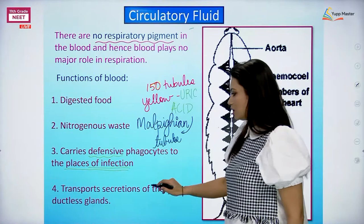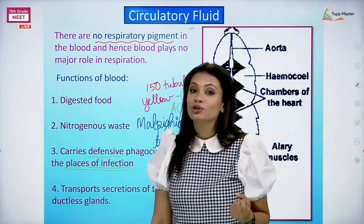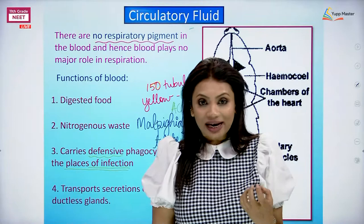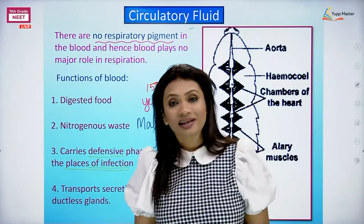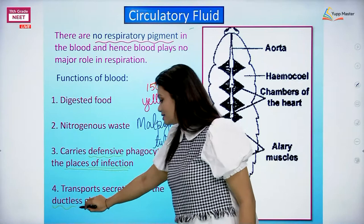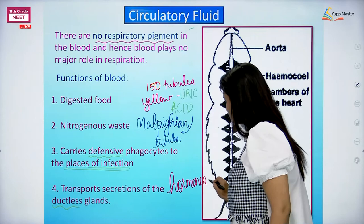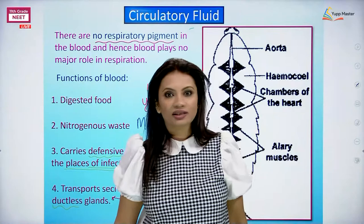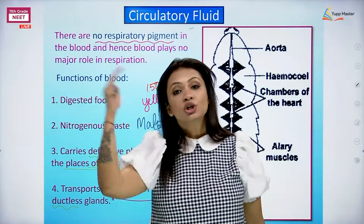Fourth function: cockroaches also have glands which secrete, and cockroaches have hormones too. Just like us, even the cockroaches have hormones. Who is going to carry those hormones to their target organ? The hormone might be secreted from one part of the body, but it has to work on another part altogether. The blood carries it. That is the fourth function - to transport secretions of the ductless glands. Ductless glands are the ones which secrete hormones, traveling to a different location in the body via the circulating fluid.